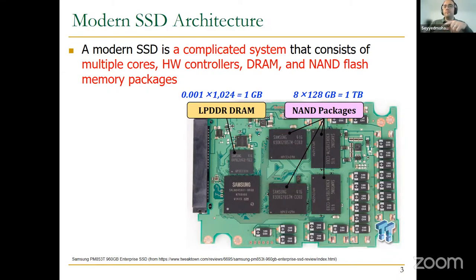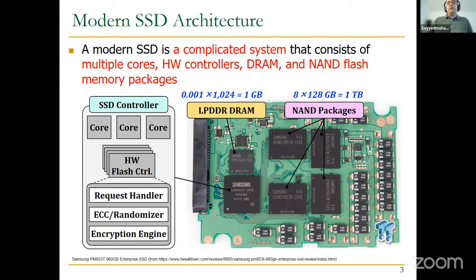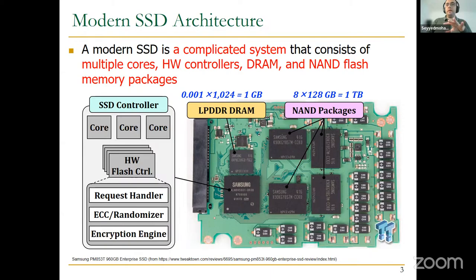We also have a small LPDDR DRAM whose capacity is typically 0.1% of the total SSD size — so if our SSD is one terabyte, we'll have something like one gigabyte of LPDDR DRAM. And we have an SSD controller, which is essentially a multi-core processor that also has some hardware Flash controllers. These Flash controllers handle request handling, ECC, randomization, and an encryption engine. In this lecture we are going to learn more about these components and the reason we have them.